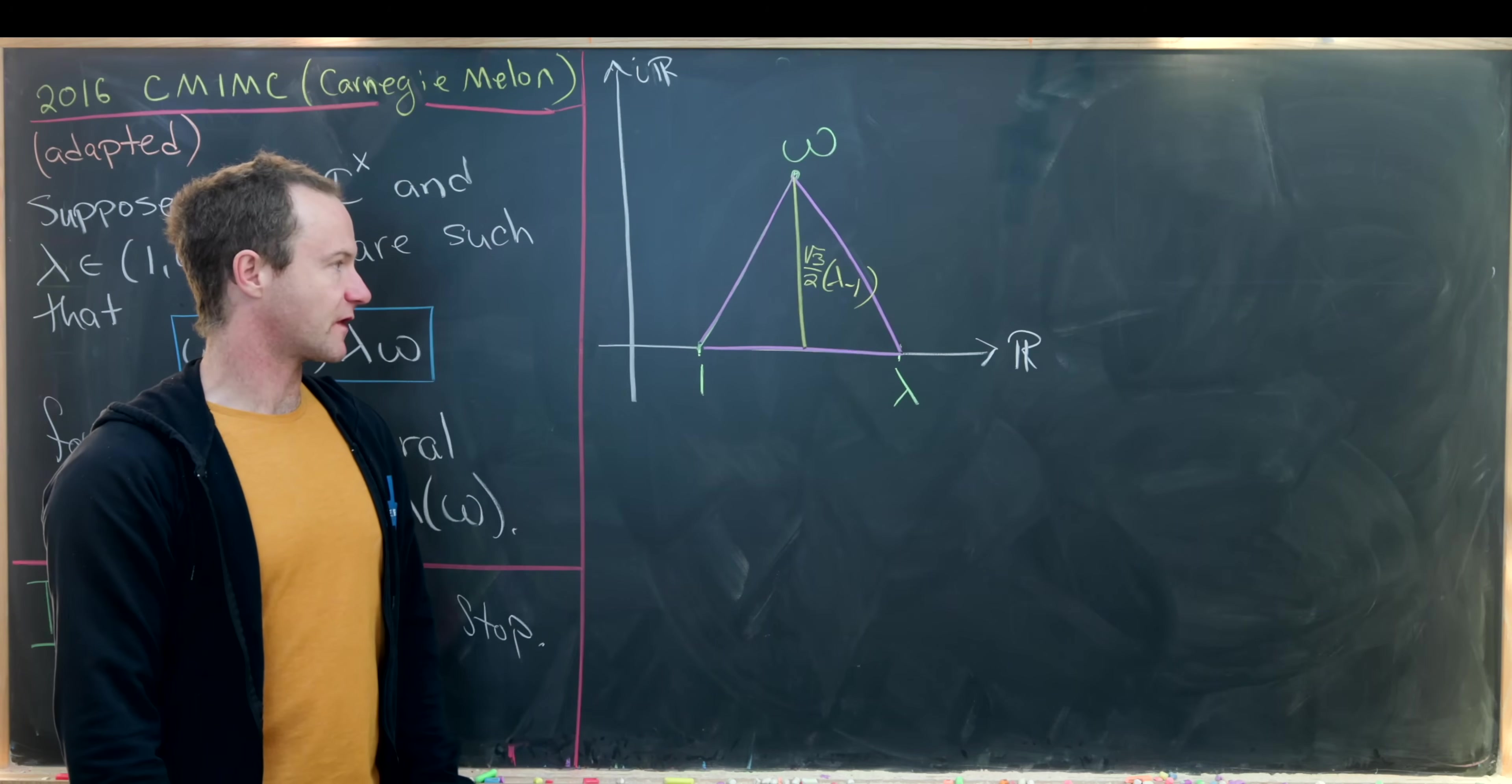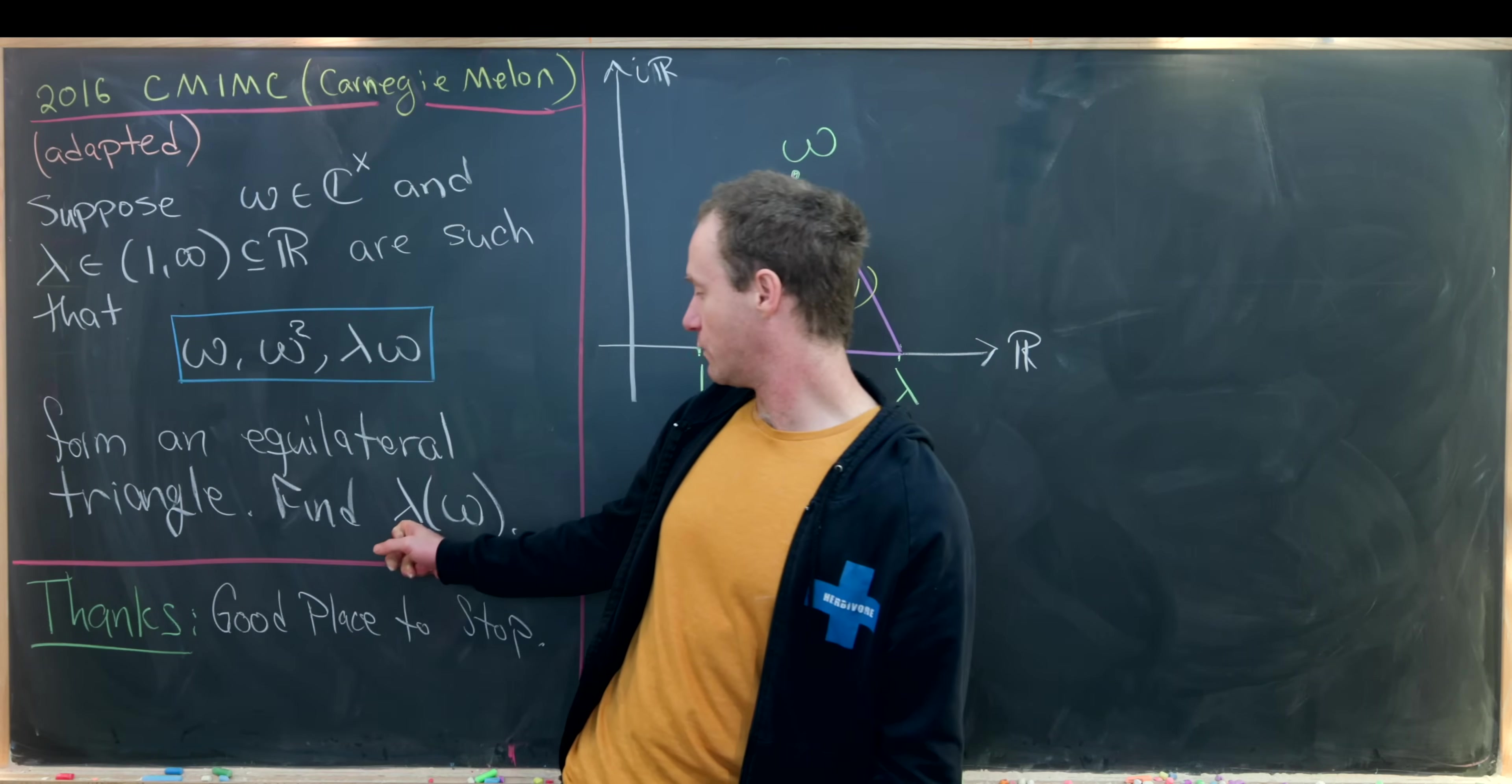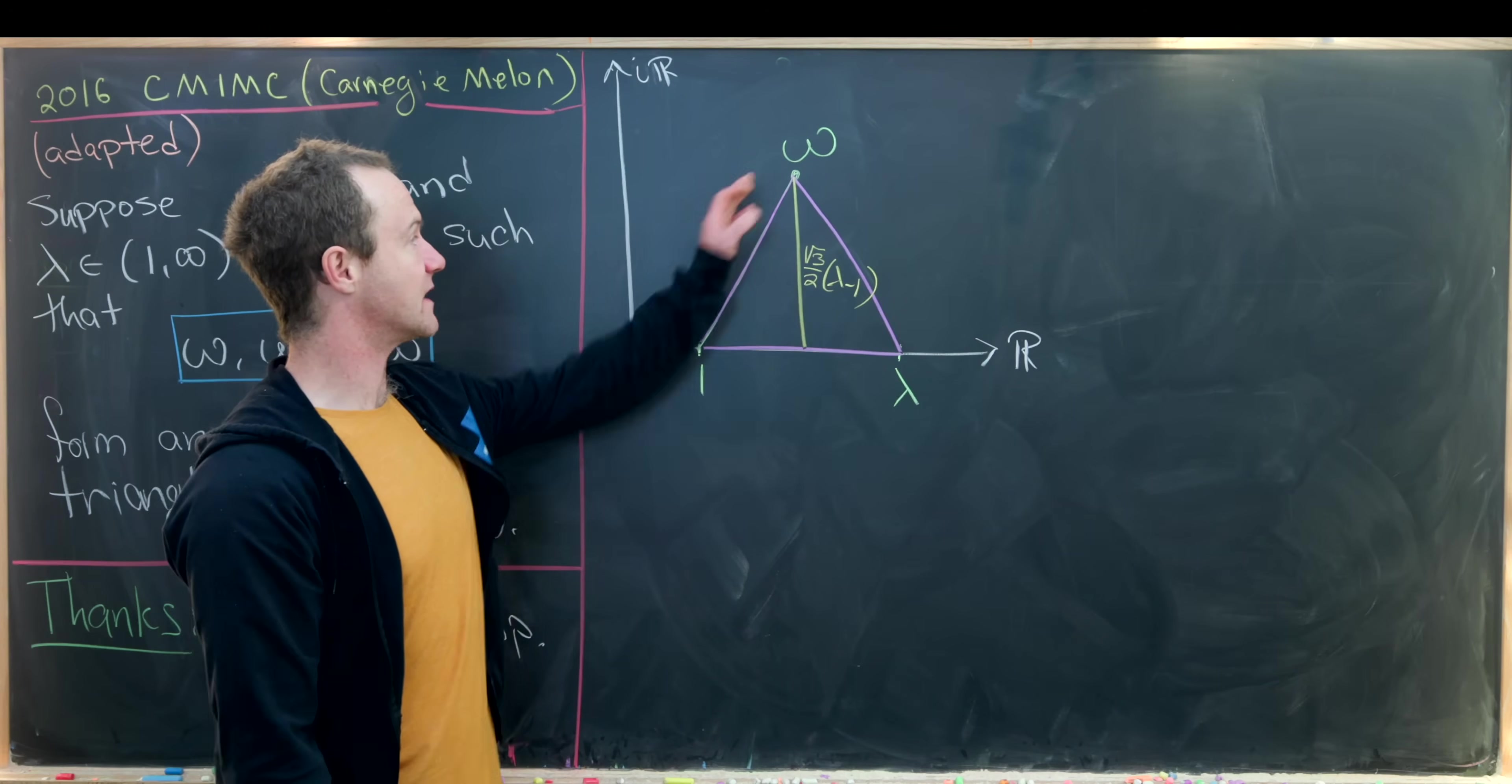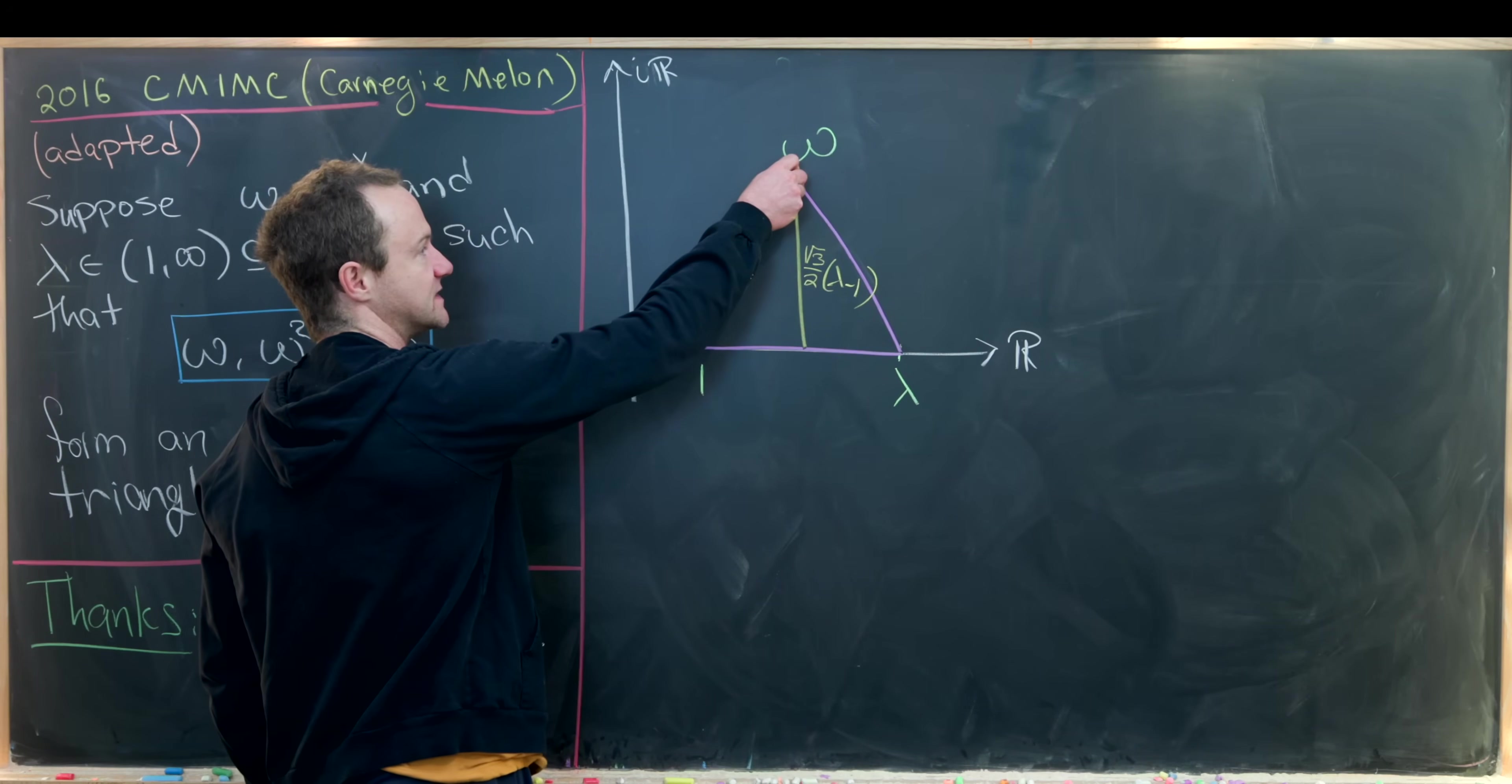So this is the picture that we ended up with on the last board. And now we have enough information to write lambda as a function of omega. And in fact, not only will lambda be a function of omega, but it will be a function of the modulus of omega or the distance of omega from the origin, which is maybe a little bit stronger of a condition. So in order to see that, we need to introduce another triangle into this situation.